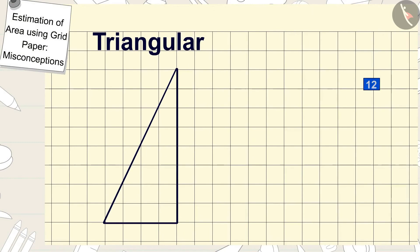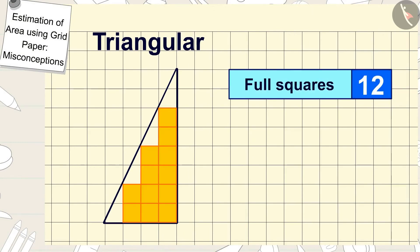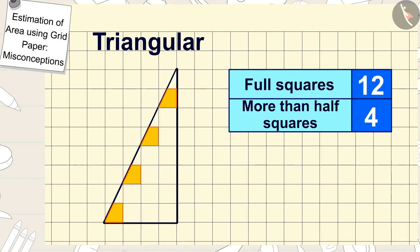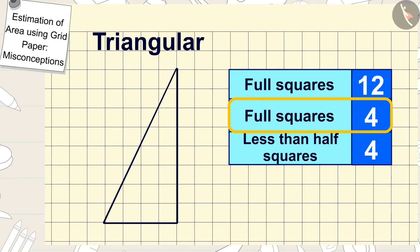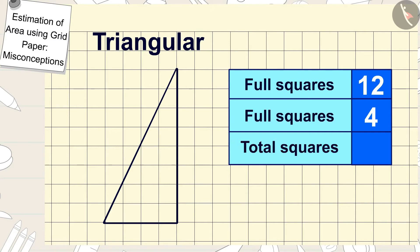There are 12 full squares in the area of the triangle shaped plate. There are 4 more than half squares and 4 less than half squares. So we will count 4 more than half squares as 4 full squares. And we don't count the less than half squares. In this way, there are 16 squares in the area of the triangle shaped plate.